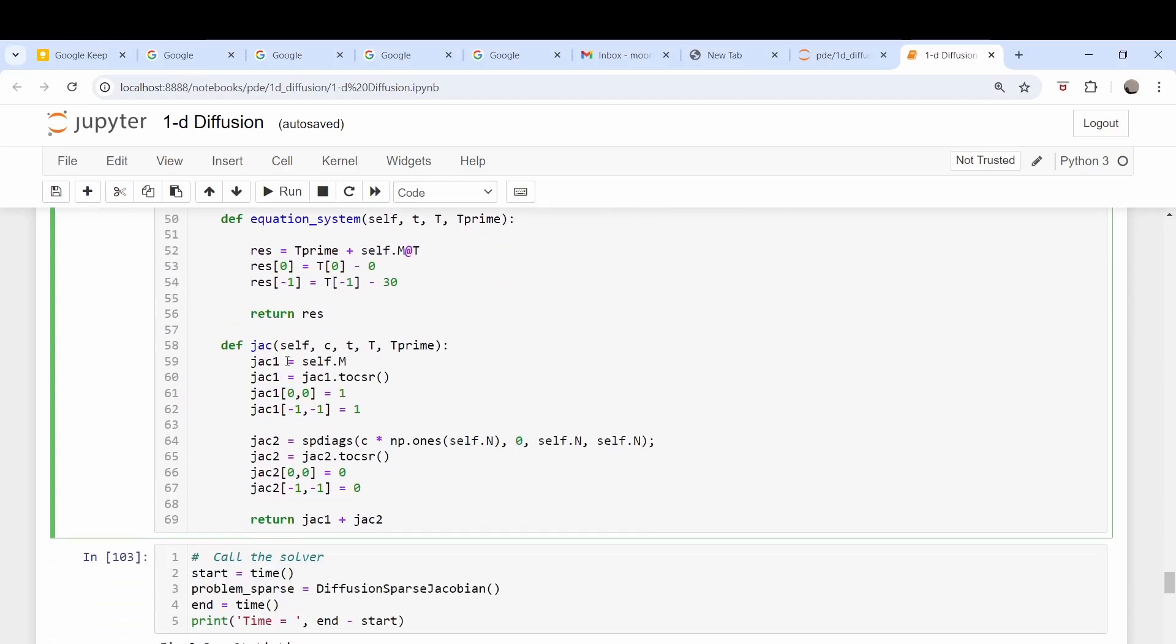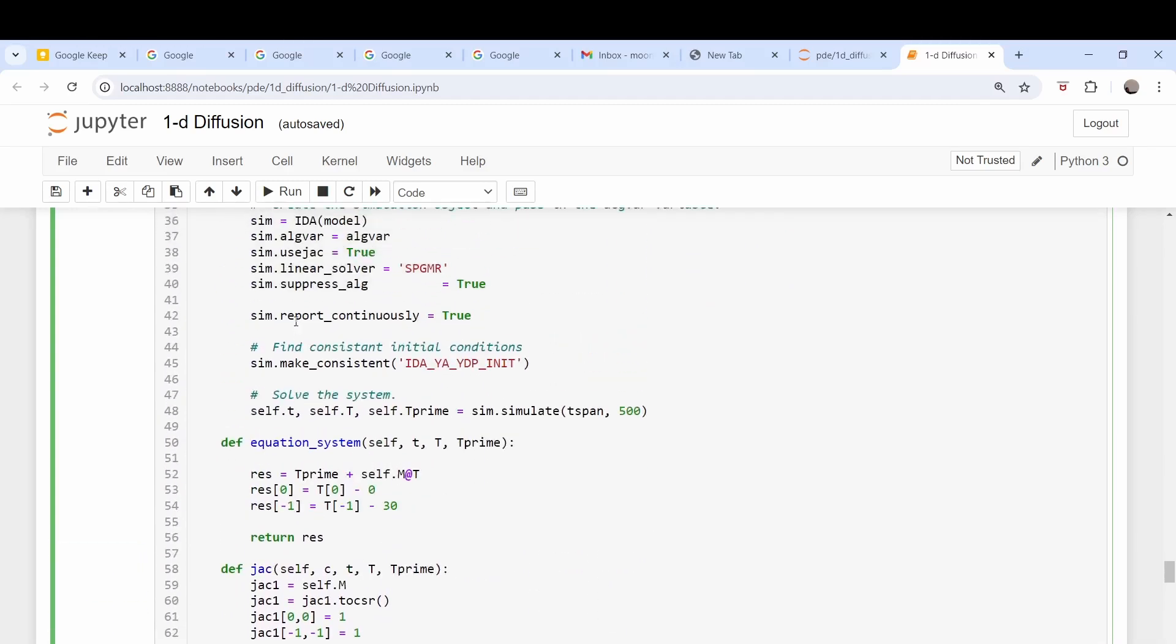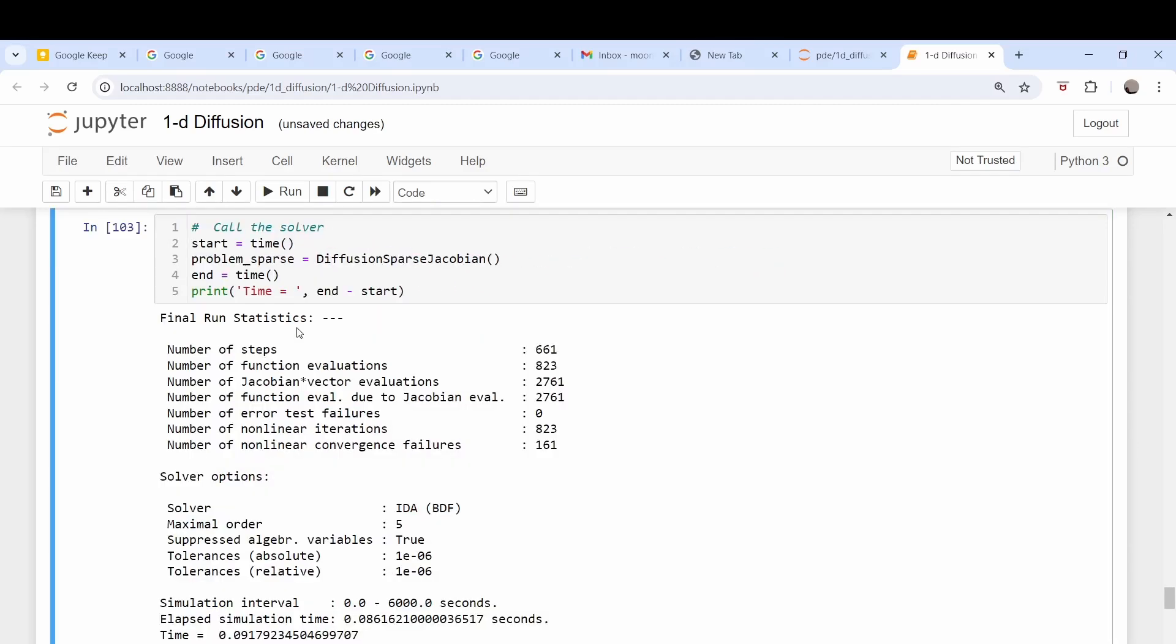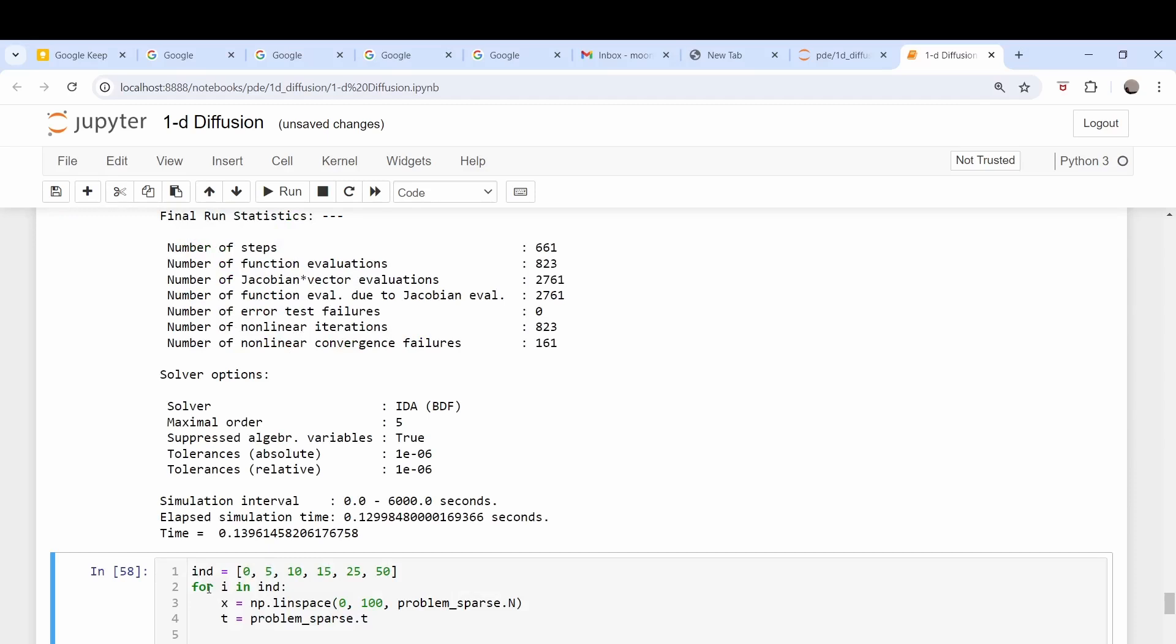We come down here, we have the definition of the Jacobian matrix down here, we have set the solver to sparse. So let's run this code and then run it again, and we have 0.1 seconds. So we got this big speed up, we got this big increase in performance.